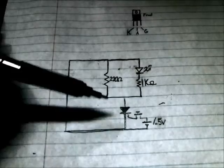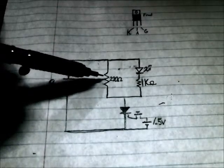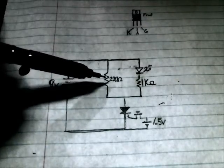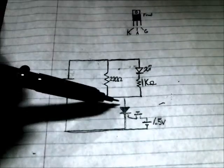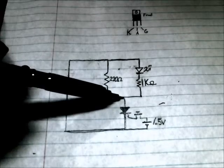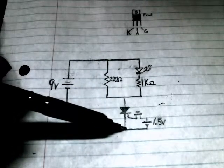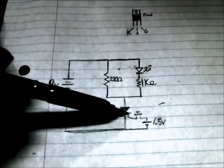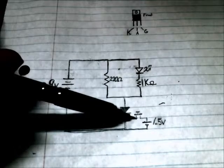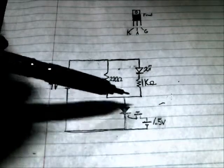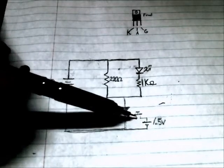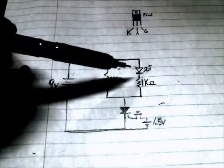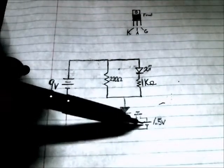It's got a 9 volt potential, 220 ohm resistor, 1k ohm resistor with an LED in series with that, and then both of those come together through the SCR. At the gate there's a momentary on push button switch with a 1.5 volt source connected to the switch, which is just a AA battery.